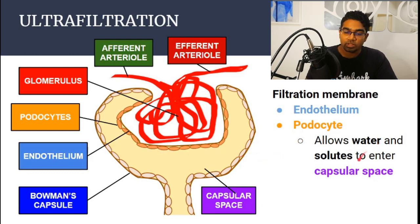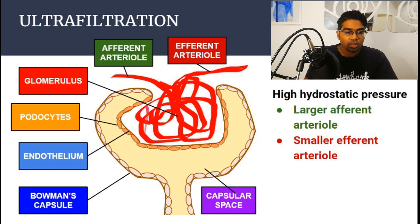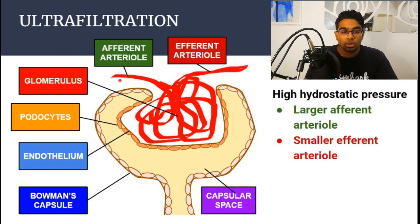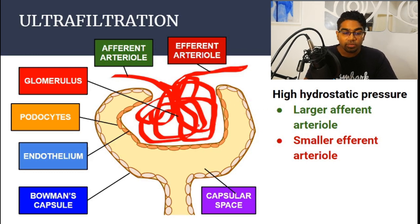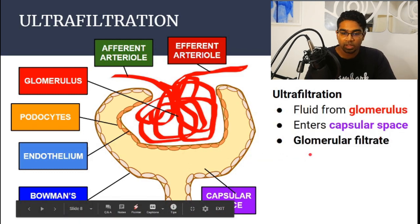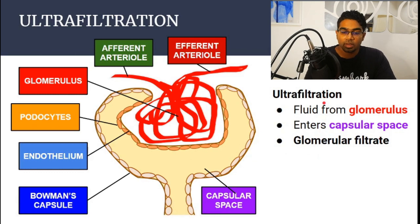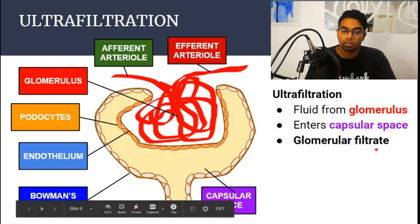The filtration membrane only allows water and small solutes to enter the capsular space. When blood comes to the glomerulus, the afferent arteriole has a larger diameter compared to the efferent arteriole. Because the diameter of the efferent arteriole is smaller, the pressure created inside the glomerulus is high — this is called the hydrostatic pressure. This high hydrostatic pressure forces the liquid out into the capsular space. This is what ultrafiltration means. The filtrate is the fluid that has already passed through the filtration membrane, and this is known as the glomerular filtrate.